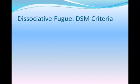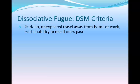Dissociative fugue is kind of like dissociative amnesia plus. This is sudden, unexpected travel away from home or work with an inability to recall one's past. There's some dissociative amnesia here, but also travel — fugue means 'flight.' So you've left wherever you were and you can't remember stuff. If you didn't leave, it's just dissociative amnesia; if you left, it's a different disorder.